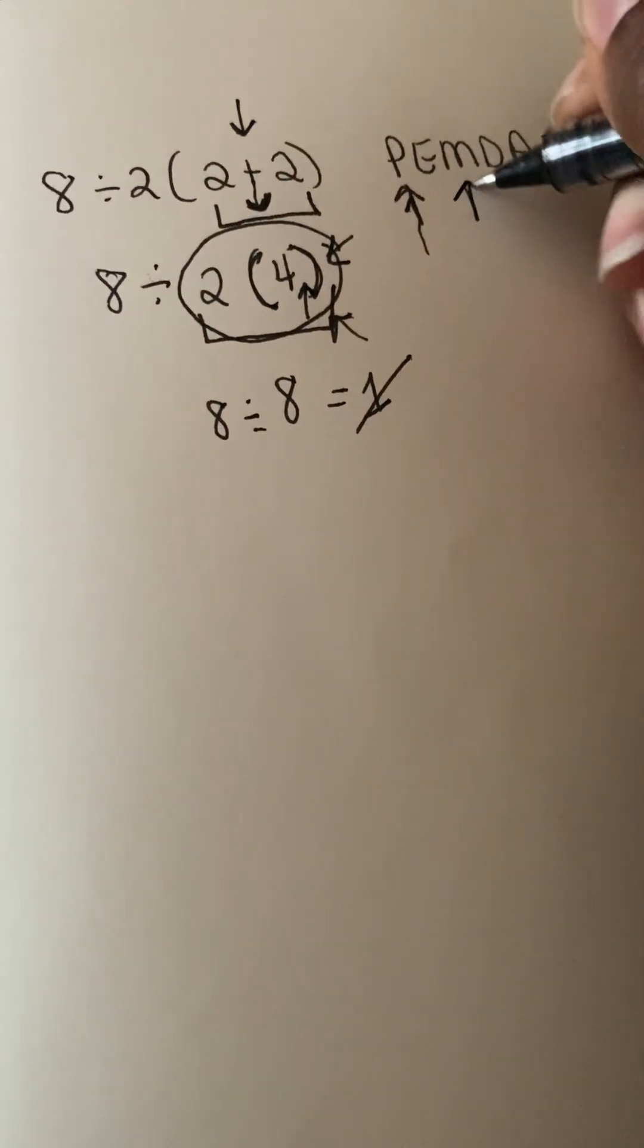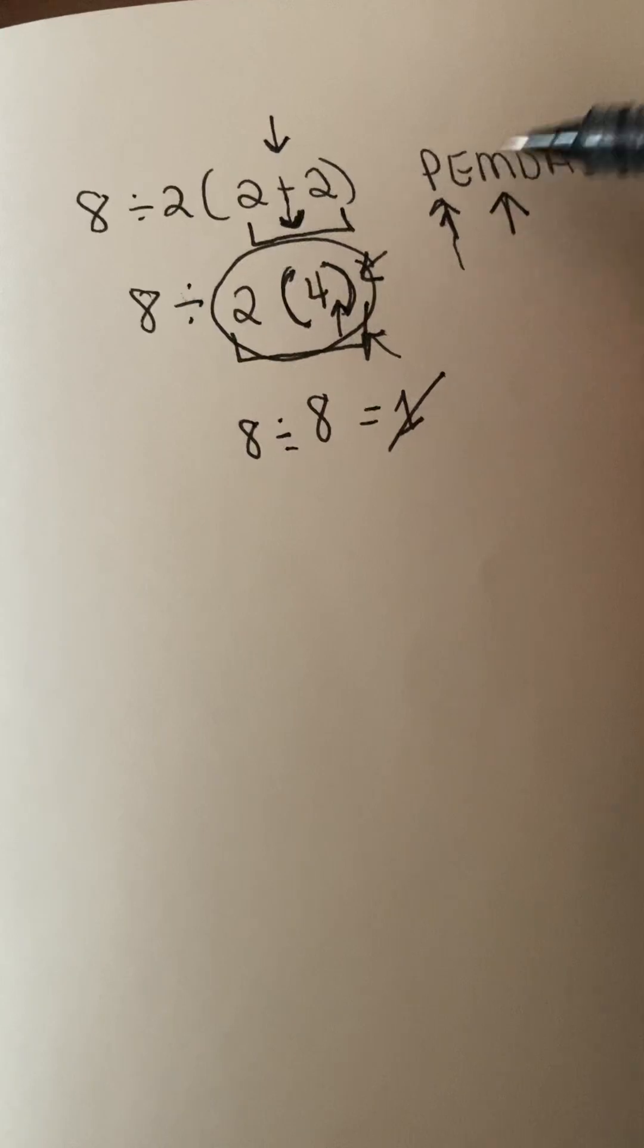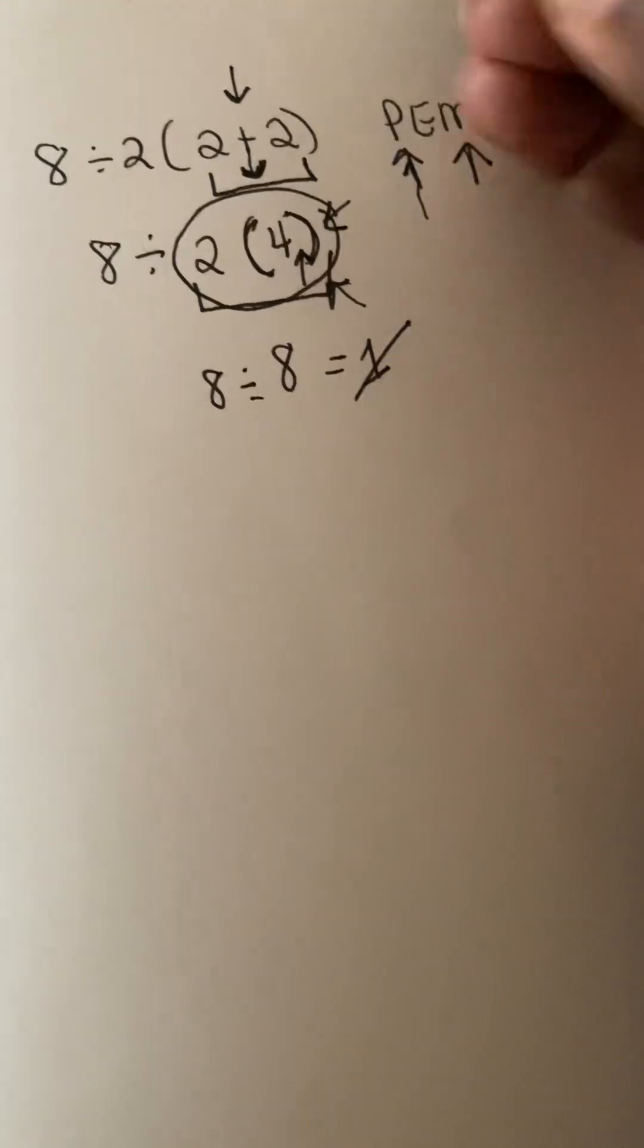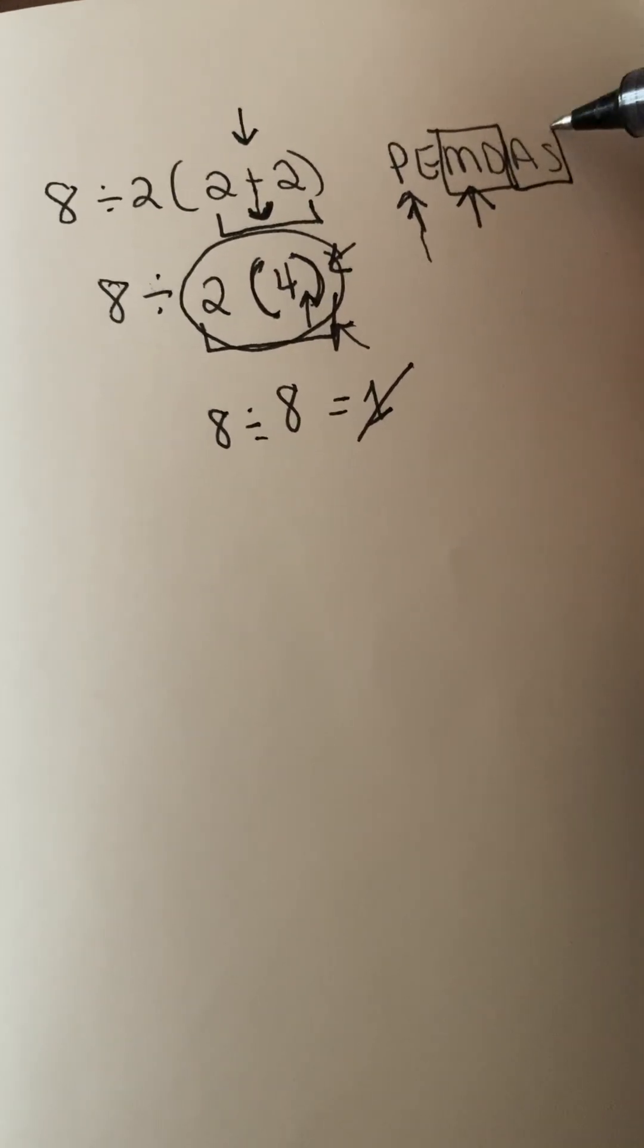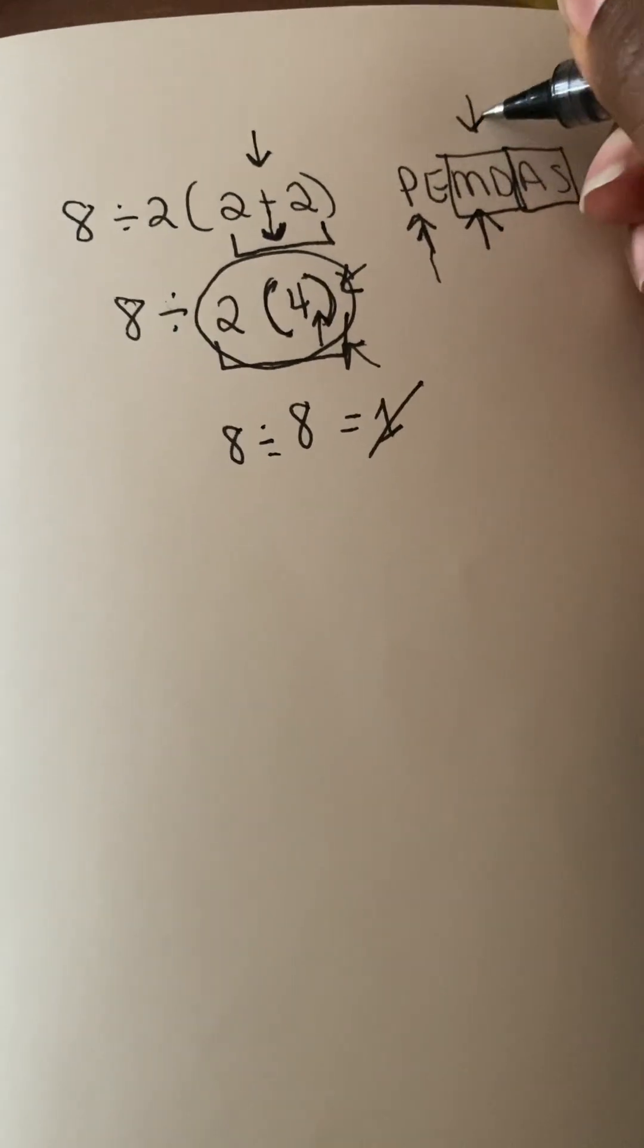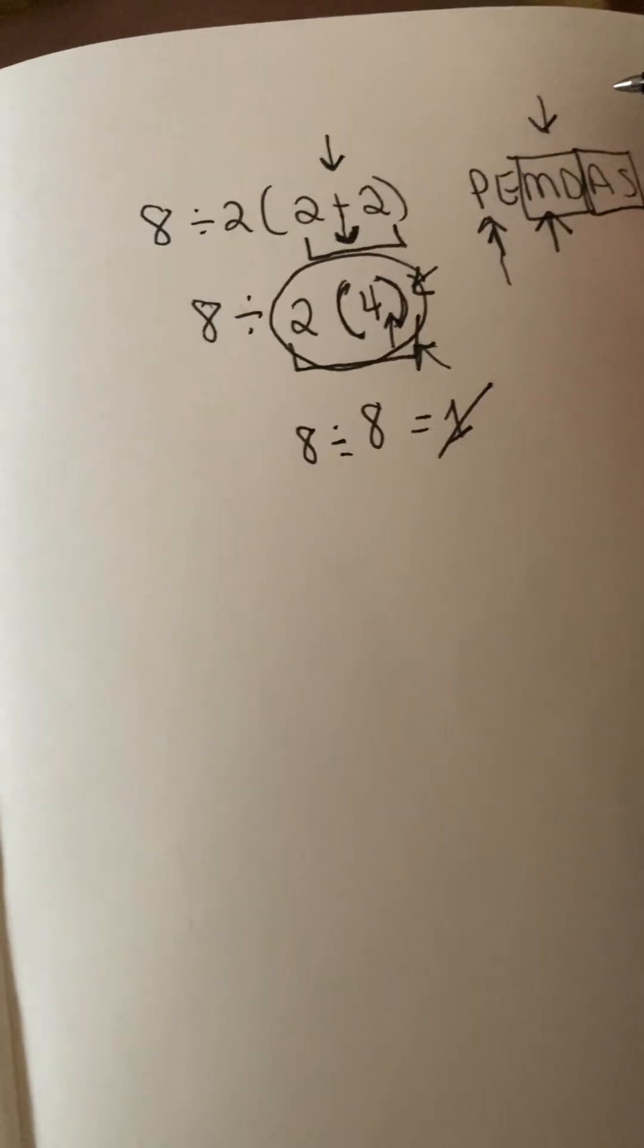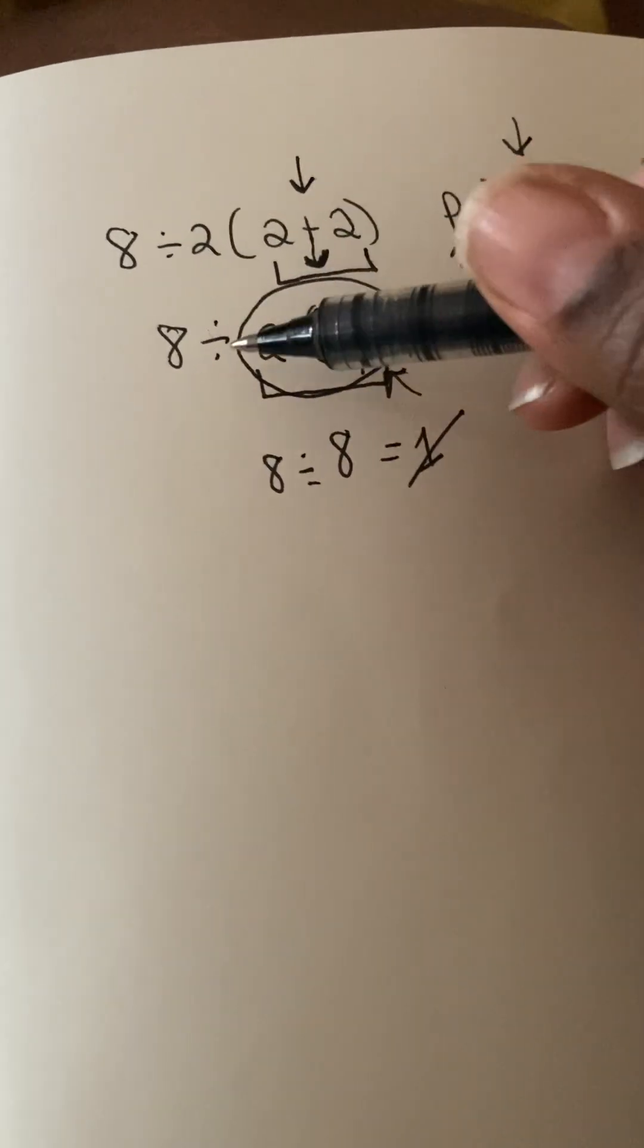So when you have division and multiplication, because these are written side by side, and addition and subtraction is written side by side, the rule is whatever comes first is what you do first. So if division comes first, then you would divide first, then multiply.